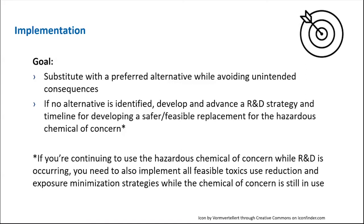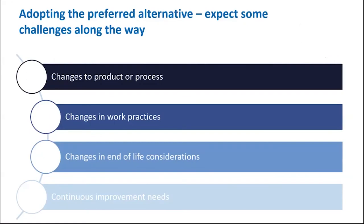If you're continuing to use the hazardous chemical of concern while research and development is occurring, you need to implement all feasible toxic use reduction and exposure minimization strategies. You've gone through all the assessment steps — scoping, identifying alternatives, evaluating and comparing alternatives associated with hazard, exposure, cost, and performance characteristics — and have made decisions regarding a preferred alternative, or that no alternative is considered safer and/or feasible. Remember, the assessment of alternatives is action-oriented. It's about applying the results of the assessment, and it is not the last step in the informed substitution process. For example, the company Vlisco, a Dutch manufacturer of unique batik print textiles for the African market, evaluated a range of alternatives to trichloroethylene (TCE) used in its manufacturing process.